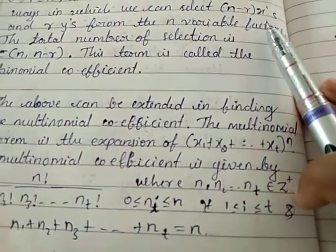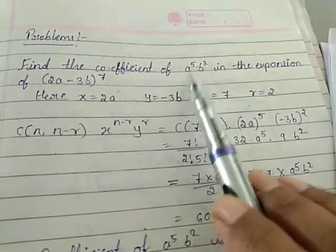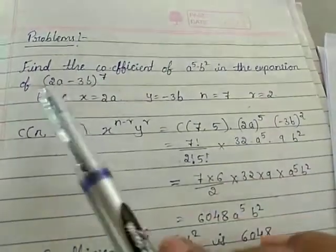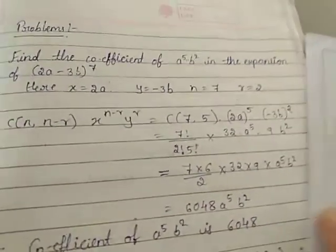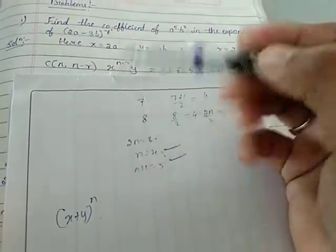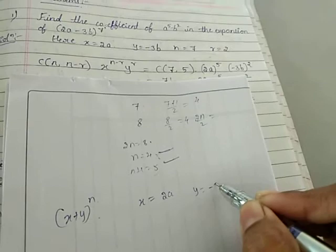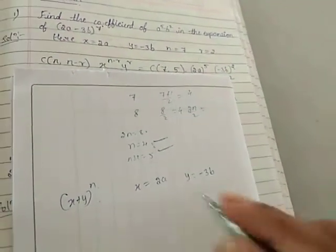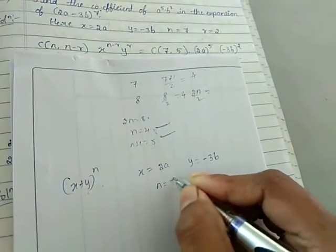Now moving to the examples for all kinds of problems on the binomial theorem. The first example is: find the coefficient of a^5·b^2 in the expansion of (2a - 3b)^7. We compare this with (x + y)^n, so x = 2a, y = -3b, and n = 7.